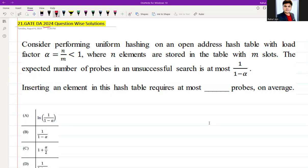The question states: consider performing uniform hashing on an open address hash table with load factor α = n/m where n/m is less than one, that is α < 1, where n elements are stored in the table with m slots.